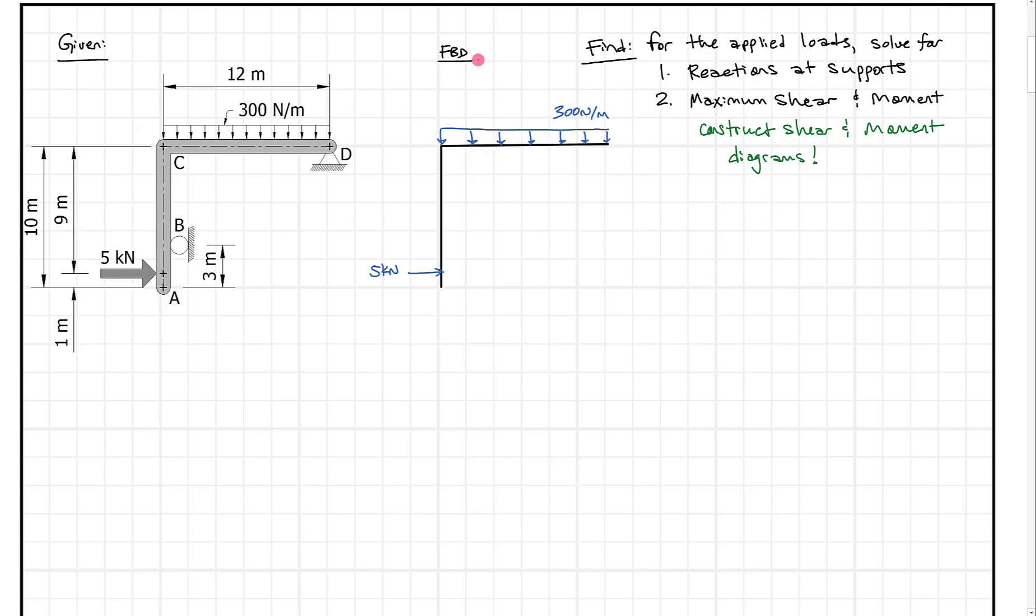When I draw my free body diagram, I put all the forces back in and add forces for the supports. Here we have Dy, Dx, and Bx. I'll draw in dimensions as we use them, and remember to draw the local and global coordinate system. We'll start with our global coordinate system showing which directions we use for forces in x, forces in y, and moments.